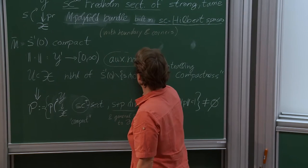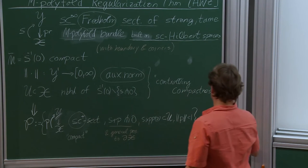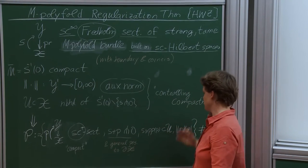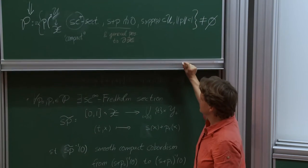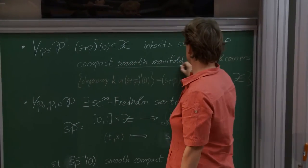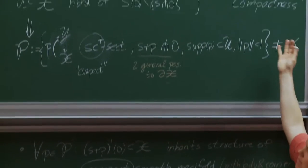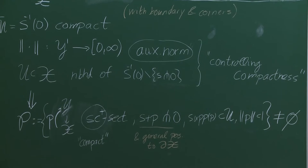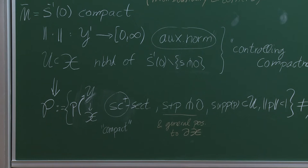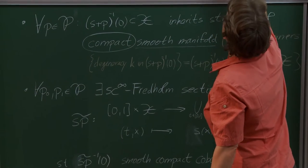I need to explain what an auxiliary norm is, what 'spread-holm' is, and what SC-plus and controlling compactness mean. If you just add a perturbation in this infinite-dimensional setting, it's totally unclear that the perturbed zero set is compact. It's going to be smooth if it's cut out transversely, but why is it compact? We build this into the definition: controlling compactness means that if I have any SC-plus section satisfying those two conditions — not necessarily transversality — then this set, however irregular, is compact.